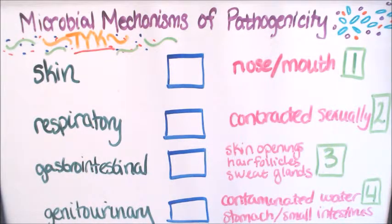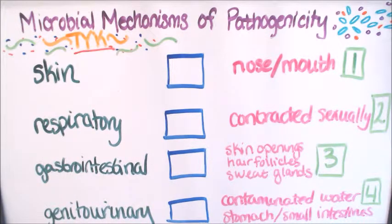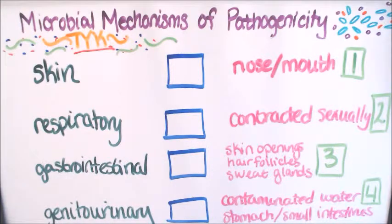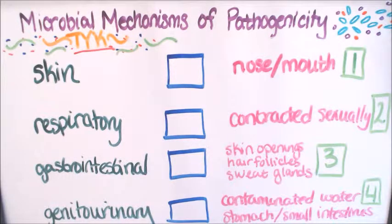Welcome to the test your knowledge portion of the video. This is about portals of entry and microbial mechanisms of pathogenicity. On the left-hand side are the words, and on the right-hand side are the definitions — next to the definitions are numbers. Place the numbers in the correct box of the word.